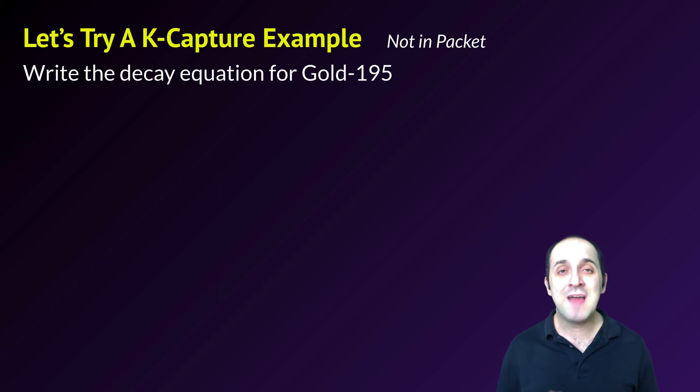Finally, let's look at a K capture example. This is not in your packet, and in your region's curriculum you wouldn't be expected to know this. But some radioactive isotopes, rather than emit a particle, will actually capture an electron from their electron cloud and be converted into another isotope. We're going to do that for gold 195. Here we've got gold, atomic mass 195, atomic number 79. Since this is K capture, it's going to capture an electron, so I put that on the left side of my arrow. Here's my notation for an electron - it looks like a beta particle because there's really not much difference.